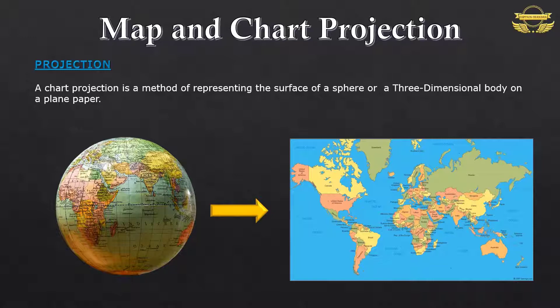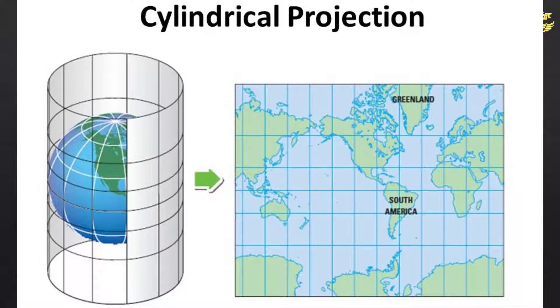The technique involves using a light source within the globe to project the latitude and longitude on flat sheets of paper.